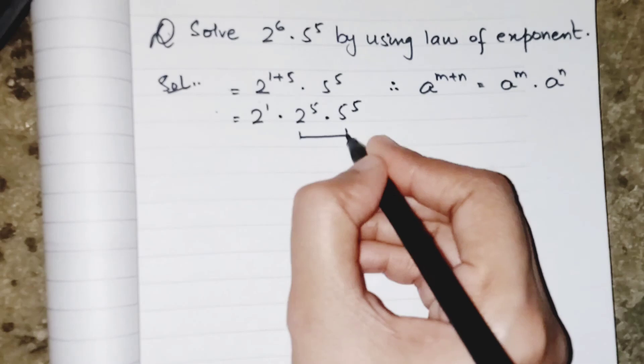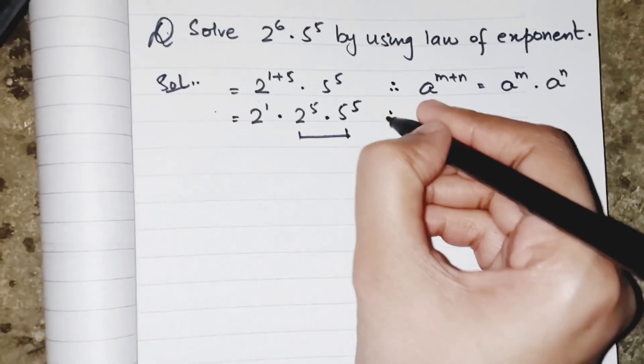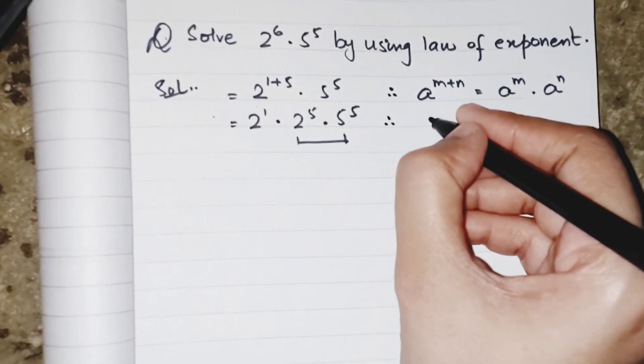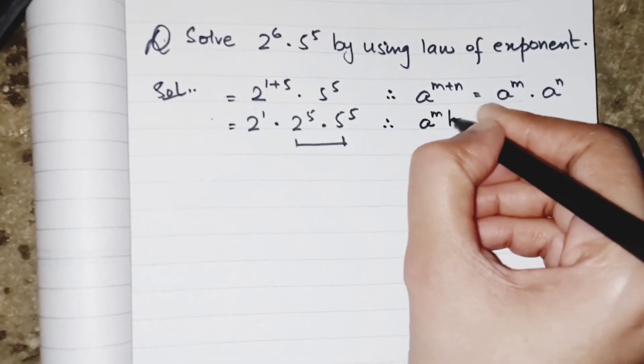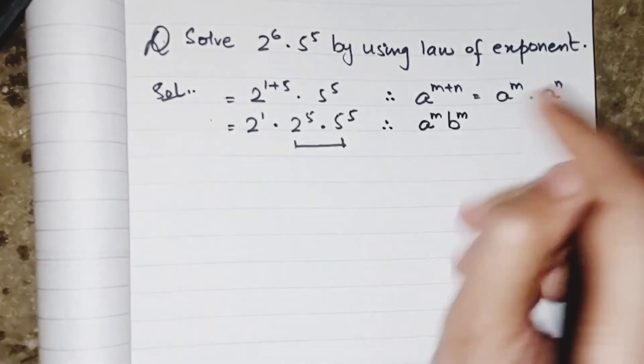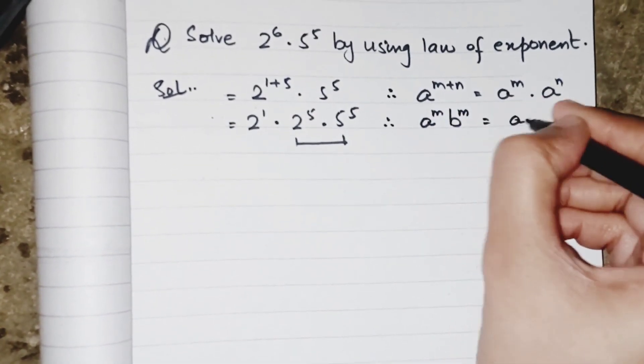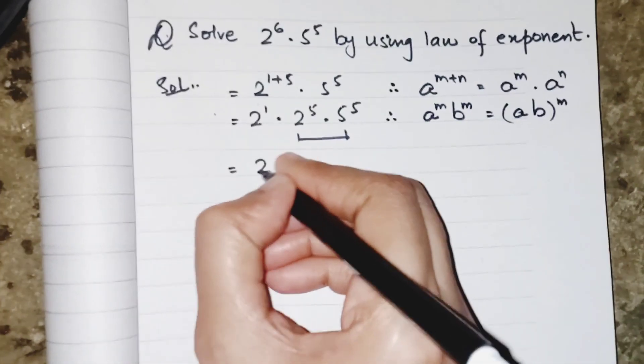Now over here, I have the same power but different bases according to the law of exponent, which is the law of product. So we can say that whenever a's power m and b's power is also m, which means different bases but the same power, we can multiply bases and write the power as common.